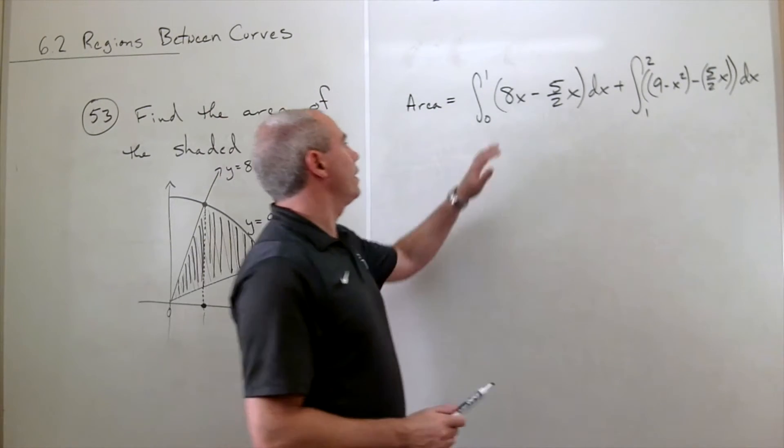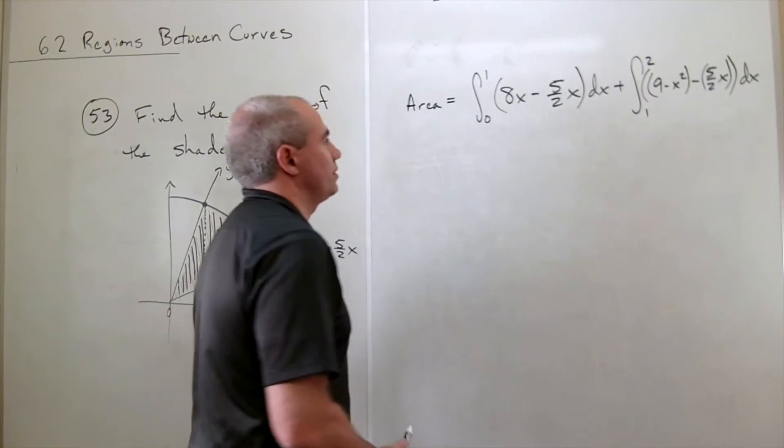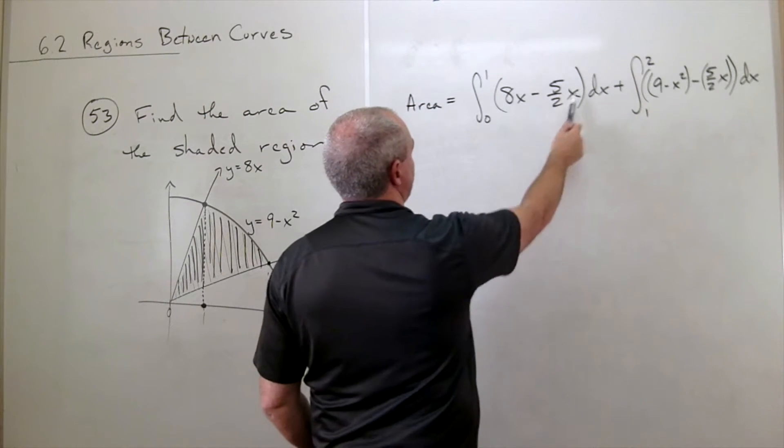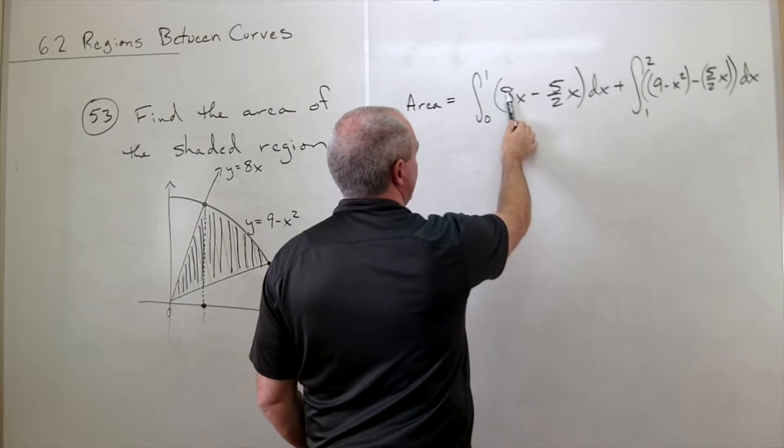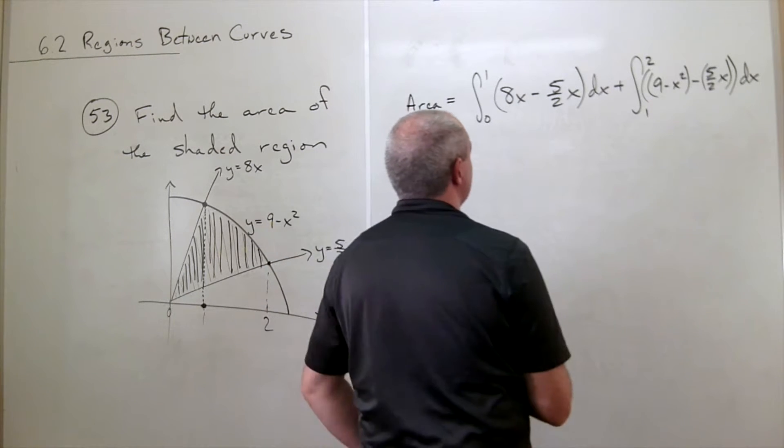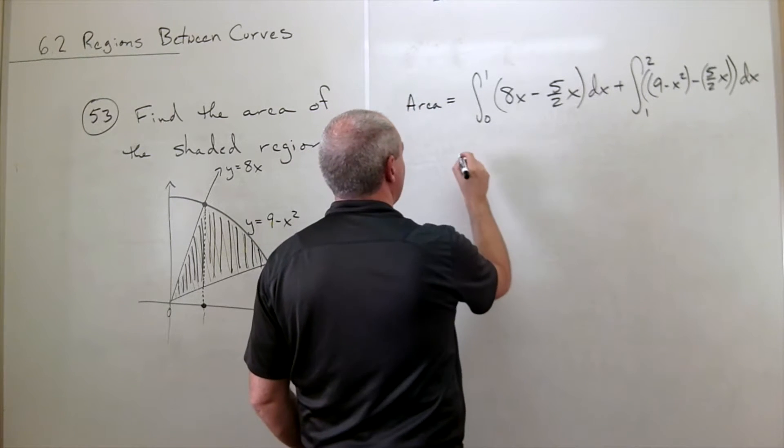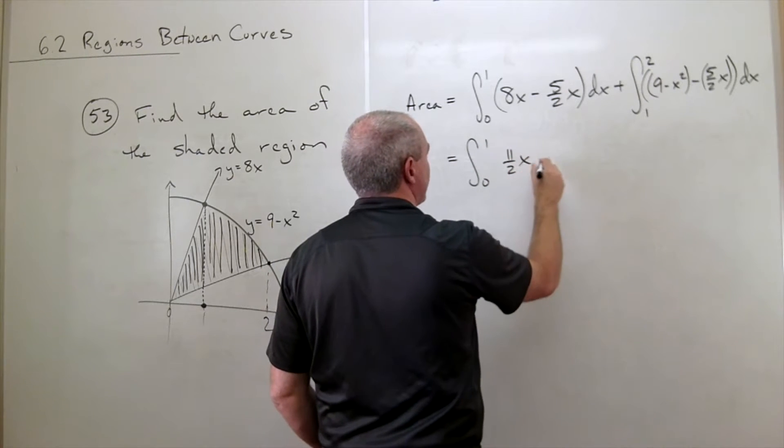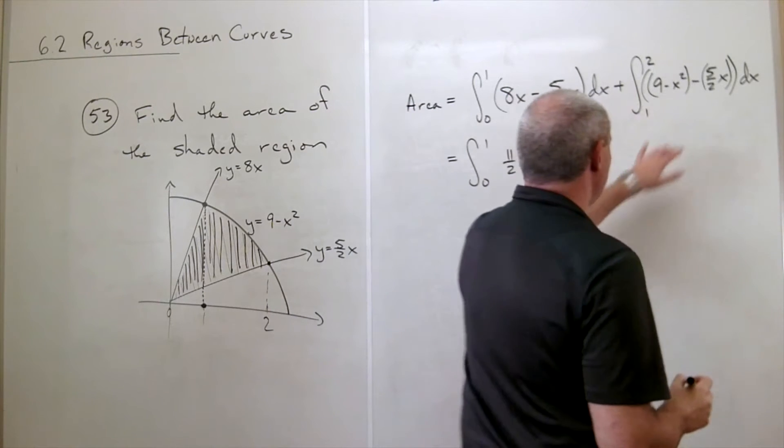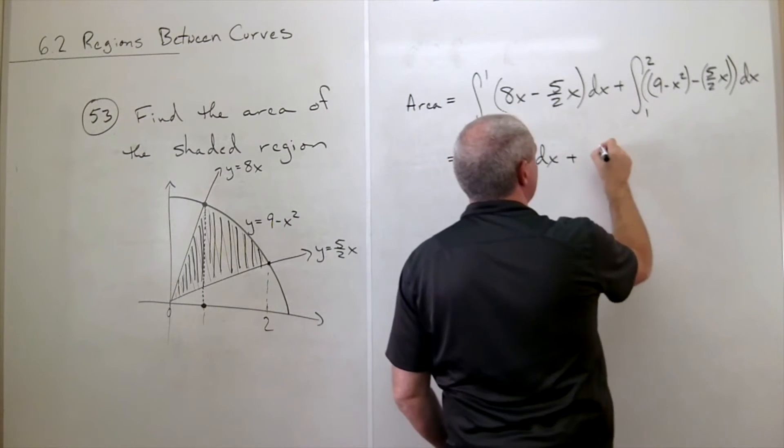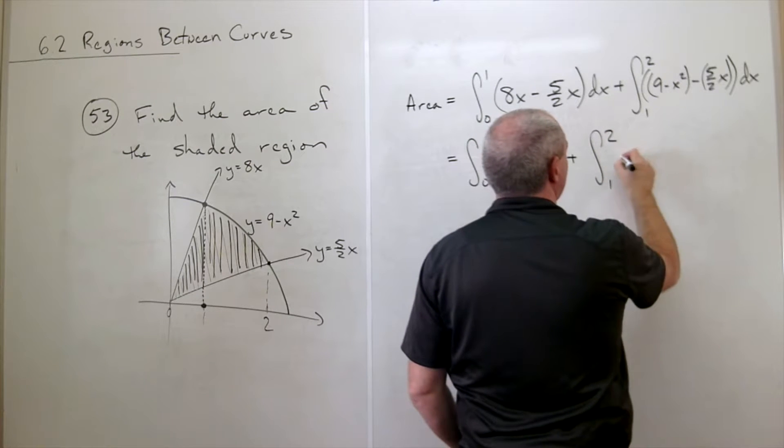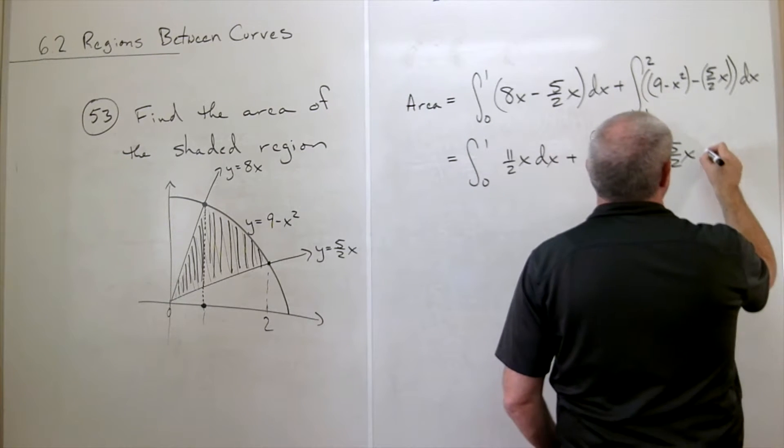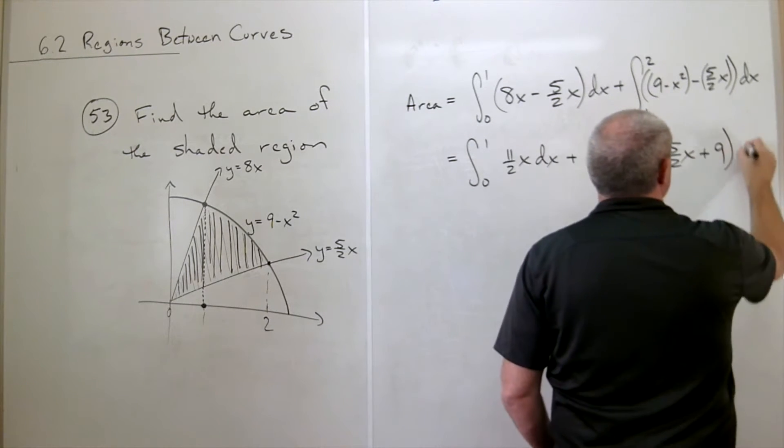Alright, so we've got our integral set up. Now we need to work through it. First, let's combine these two together. 8 is the same as 16 over 2, and 16 minus 5 is 11 over 2. So this is equal to the integral from 0 to 1 of 11 halves x dx. Then we can clean this up and say this is plus integral from 1 to 2 of negative x squared minus 5 halves x plus 9, all of that dx.